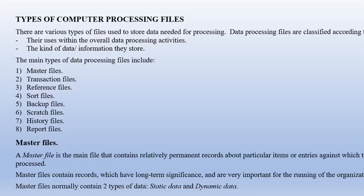Types of computer processing files: data processing files are classified according to their uses within overall data processing activities and the kind of data they store. The main types include master files, transaction files, reference files, sort files, backup files, and report files.